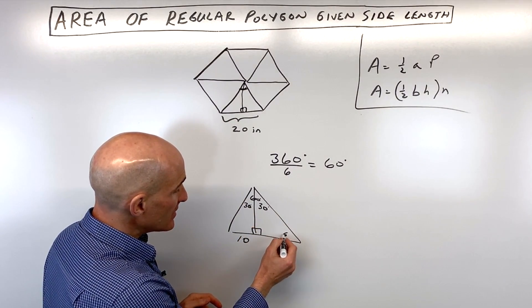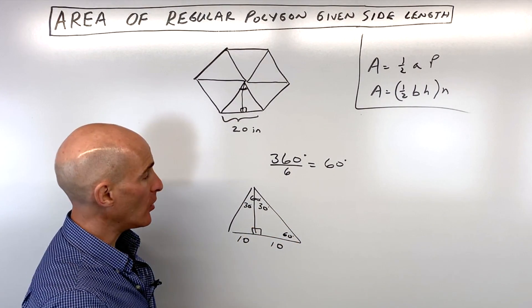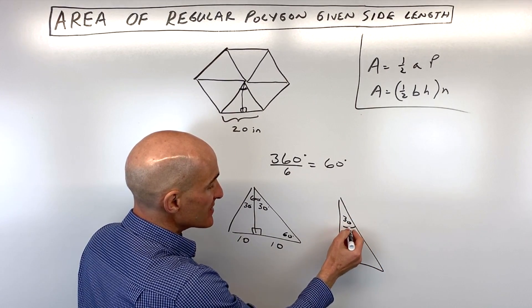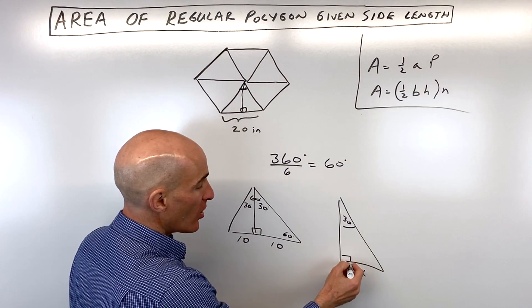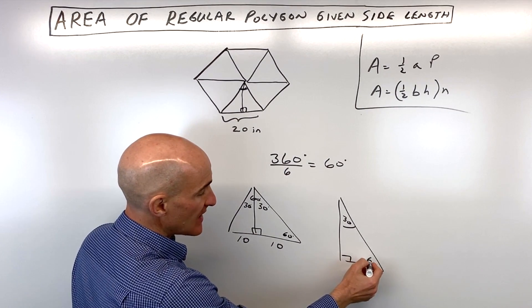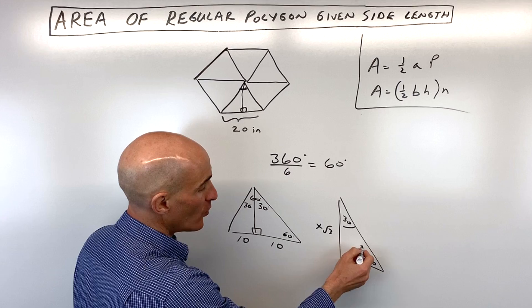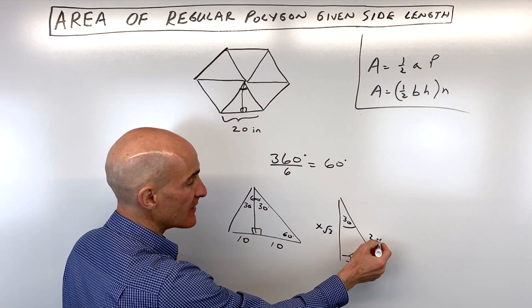You can see we've got a 30-60-90 degree triangle. Just a quick refresher on 30-60-90 triangles: the side across from the 30 degree angle we call x, that's the short leg. The side across from the 60 degree angle, that's our longer leg, that's x square root of three. And the one across from the right angle, that's our longest side, that's 2x.